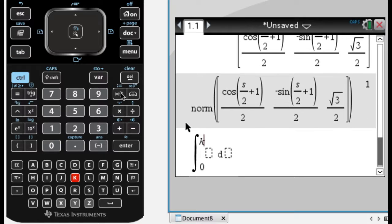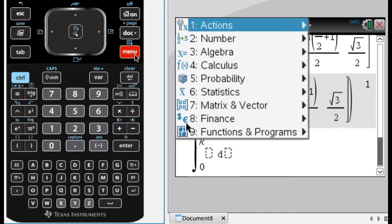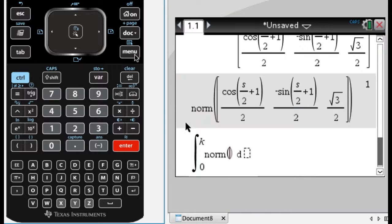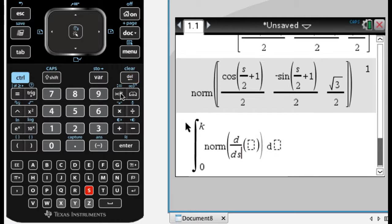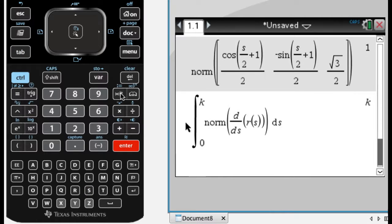If I integrate from 0 to k, the norm, so menu 7, 7 of the derivative, really just the answer that I have up there, but the norm of the derivative with respect to s, because I have s there, of r of s, with respect to s, I'm always going to get k.